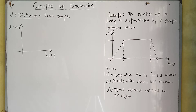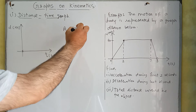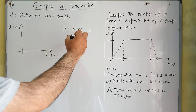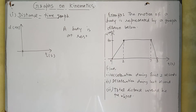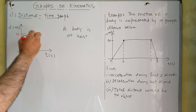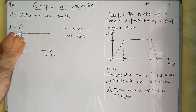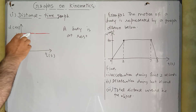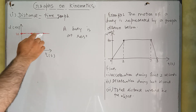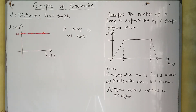We will have different types of graphs. This is the graph of a body that is at rest. Look at the graph: at this point the distance was 10 meters, at this point distance was 10 meters, and similarly at this point distance is 10 meters. Throughout the graph the distance is 10 meters, meaning the distance is not changing, so this body is at rest.